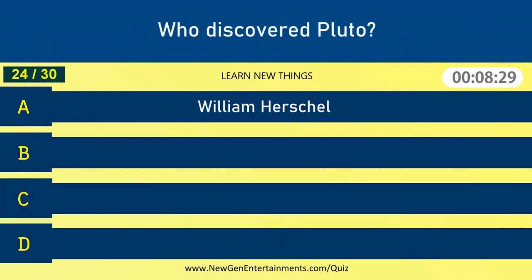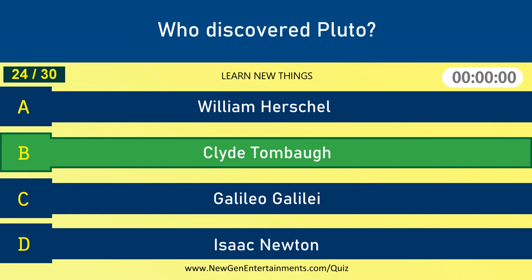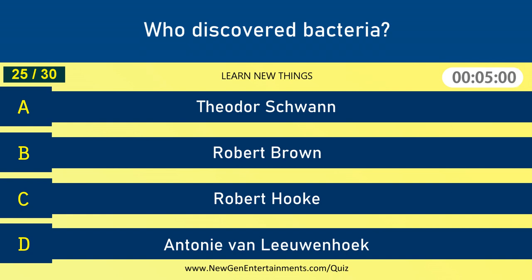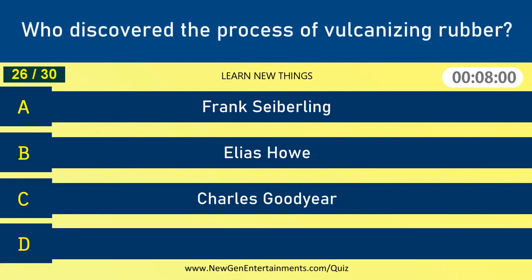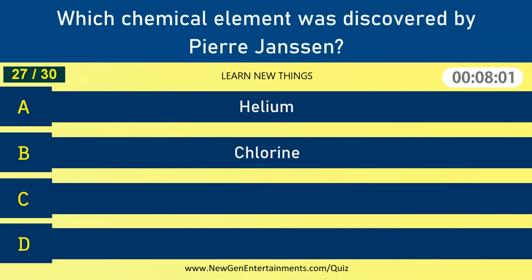Who discovered Pluto? Clyde Tombaugh. Who discovered bacteria? Antonie van Leeuwenhoek. Who discovered the process of vulcanizing rubber? Charles Goodyear. Which chemical element was discovered by Pierre Janssen? Helium.